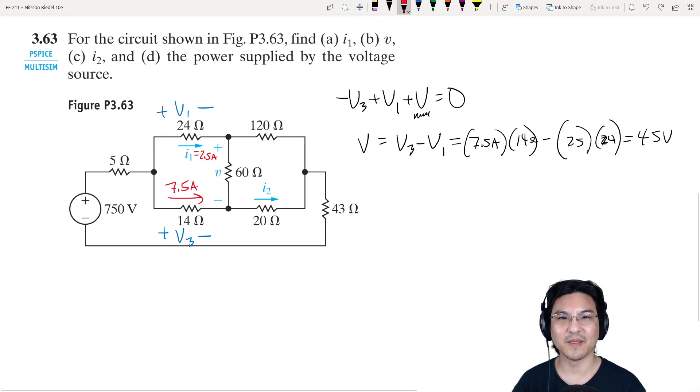Also know that if we know the voltage, 45, and we know the resistance, 60, we can even solve for the current here. Let's call this I4. I4 is going to be V over R, 45 over 60. So that is 0.75.